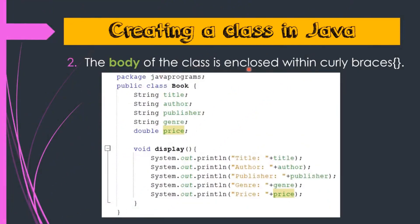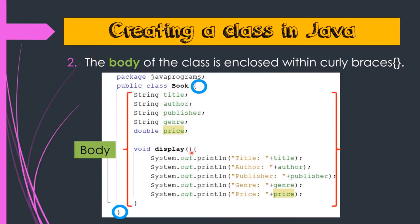The body of the class is enclosed within curly braces. Here you can see that within the curly braces some of the coding part is enclosed. This part is the body of the class that we have enclosed inside the curly braces. After writing the public class statement, we start the curly brace so that we can define or give the coding for the body of the class.